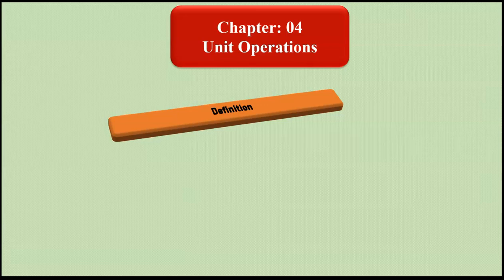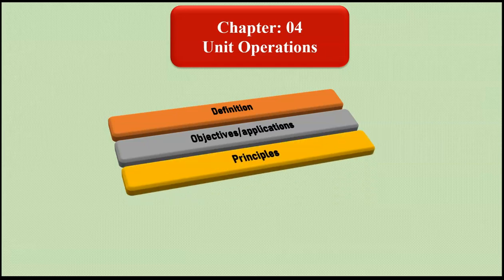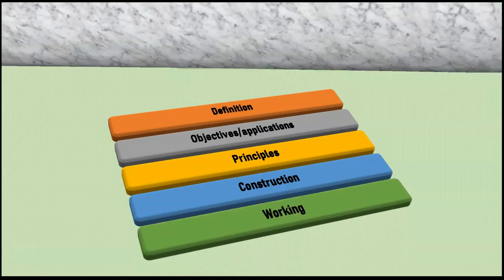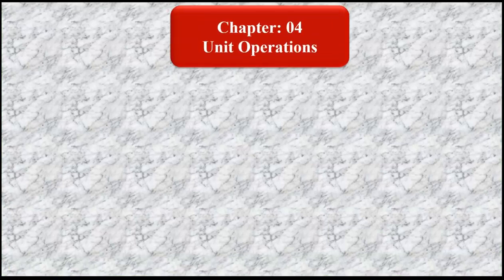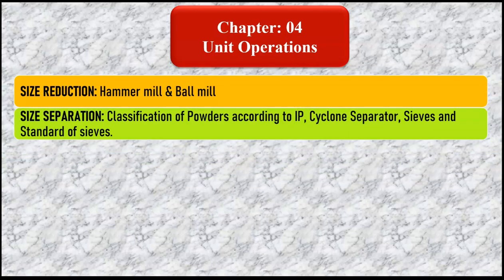Chapter number four is unit operations. We are going to study the definition, objectives, applications, principles, construction, and working of different equipment. In size reduction, we will study the hammer mill and ball mill. In size separation, we will study the classification of powders according to the Indian Pharmacopoeia, the cyclone separator, and sieves and standards of sieves.